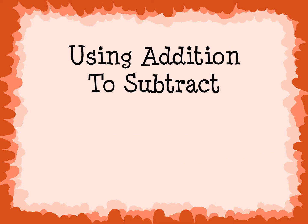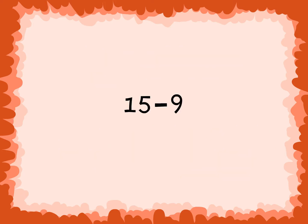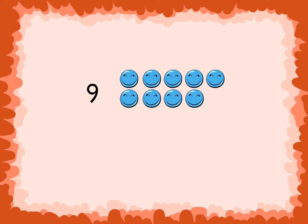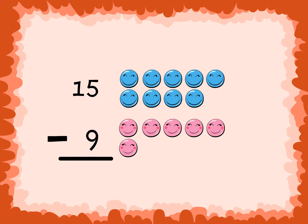Another strategy to make subtraction easier is using addition to subtract. We can use addition facts to help us find the difference in a subtraction problem. Take for example 15 minus 9. We think of the related addition problem. If we had 9 circles, how many more circles would we need to get 15? In other words, 9 plus what is equal to 15? The answer is 6. So if 9 plus 6 is equal to 15, then 15 minus 9 must equal 6.